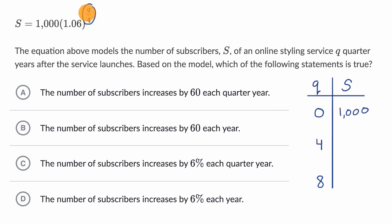Then when q equals four, what do we have? Well, this exponent is just going to be four over four, so it's just going to be one. So it's going to be 1,000 times 1.06.